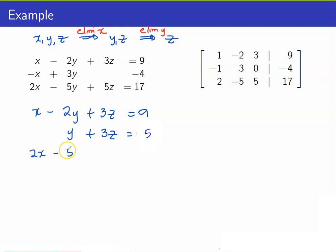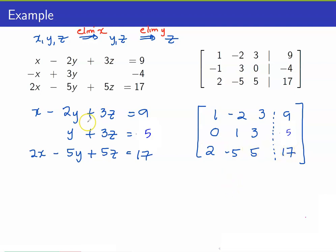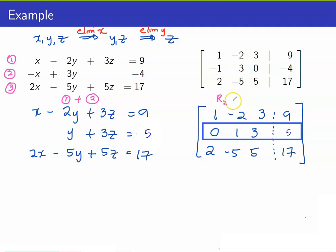The associated augmented matrix is: row 1: 1, negative 2, 3, 9; row 2: 0, 1, 3, negative 4; row 3: 2, negative 5, 5, 17. In terms of the augmented matrix, what we did was add equation 1 with equation 2 — equivalently, row 2 was replaced by row 2 plus row 1.